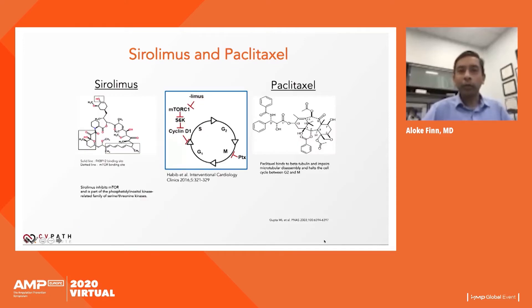Sirolimus and paclitaxel are fundamentally different types of drugs. Sirolimus is used predominantly in the coronary setting because it is more of a cytostatic drug — it inhibits the mTOR complex but doesn't kill cells until very high doses. Paclitaxel, on the other hand, is a cytotoxic drug that binds beta-tubulin, impairs microtubular disassembly, and halts the cell cycle between G2 and M, causing cellular death.